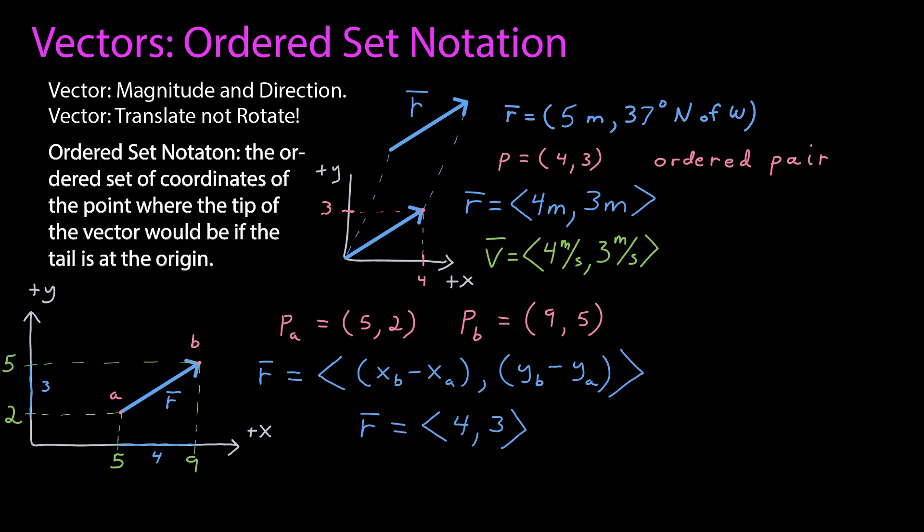And so now, if you look at the differences, this distance along the x-axis between those points is 4. This distance is 3. If you were to translate that so that this tip were at the origin, then 4 and 3 would be the point that the tip would be at.